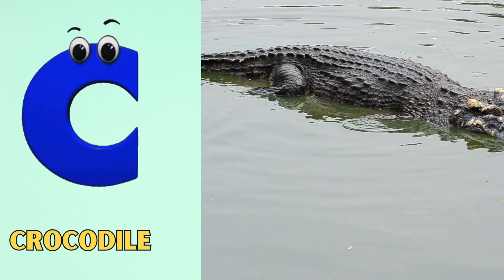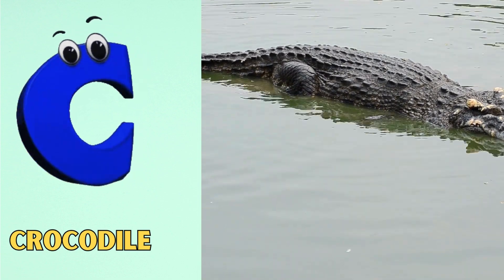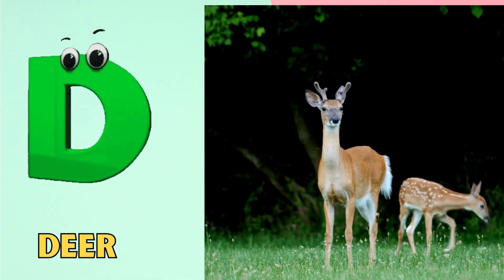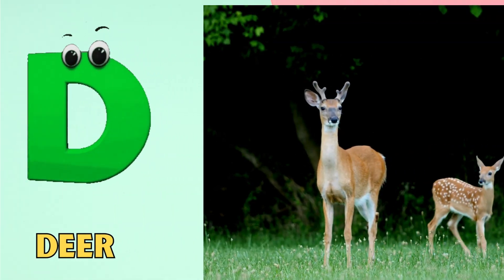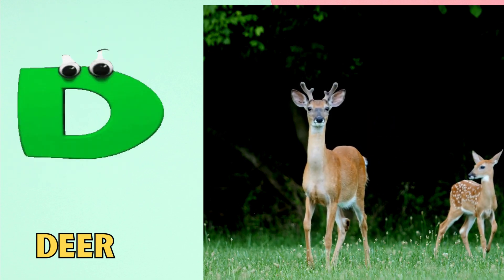C is for crocodile. Kuh, kuh, crocodile. D is for deer. Dh, dh, deer.